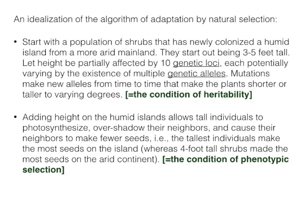Now let's move along to my idealization of the algorithm of adaptation by natural selection. Imagine we start with a population of shrubs on a continent — a big land mass. That population of shrubs sends off some seeds, maybe stuck to the wings of birds, and somehow a bunch of seeds from this big continental population arrive on a newly created island. This newly colonized island is a little different than the mainland: the mainland is arid but the island is more humid. So this new population has experienced a change in environment compared to the environment of its ancestors.